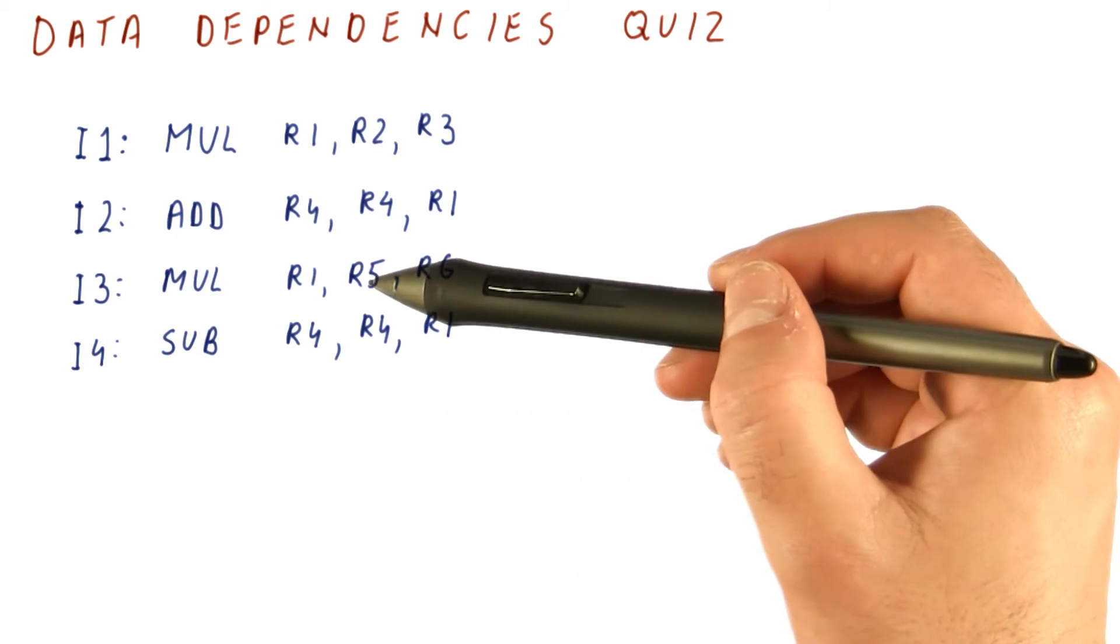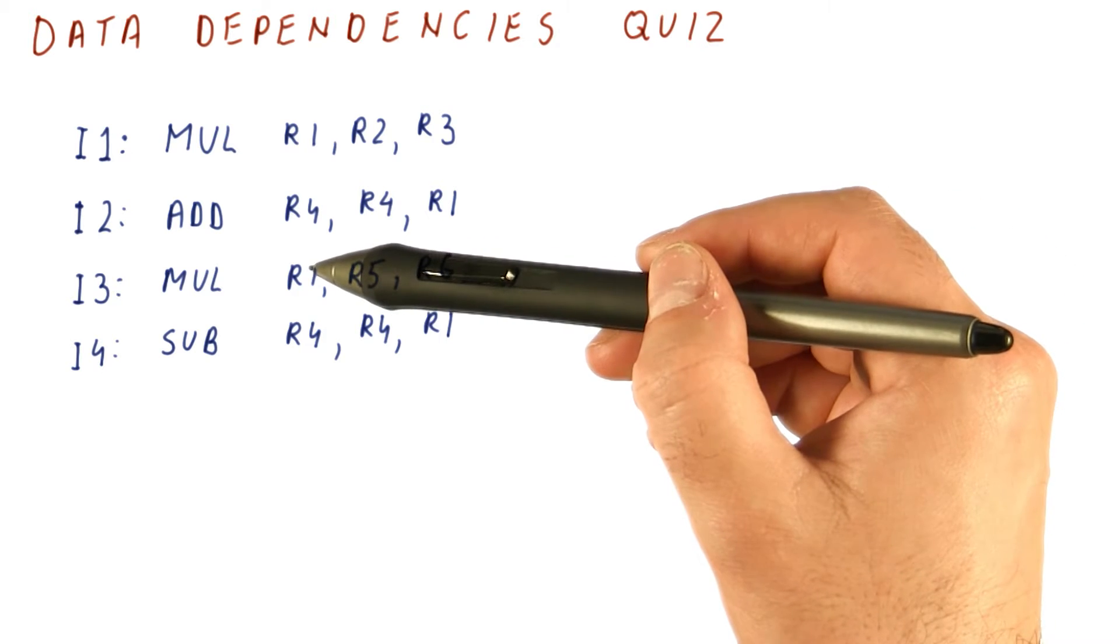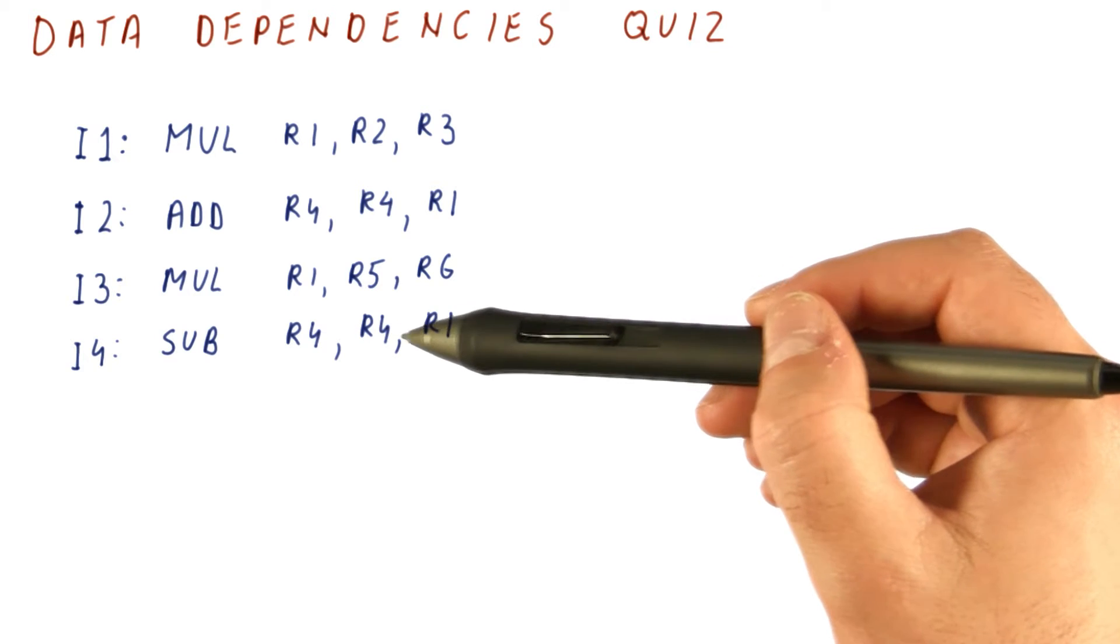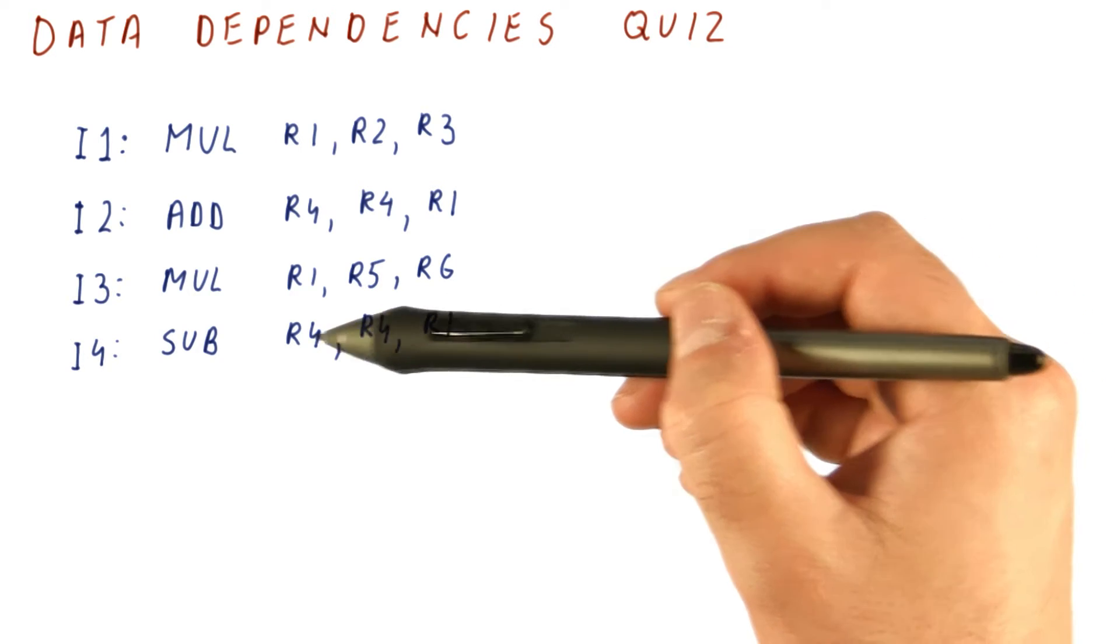Instruction three multiplies R5 and R6, puts the result in R1. And the subtract here, instruction four, subtracts R1 from R4 and puts the result back in R4.